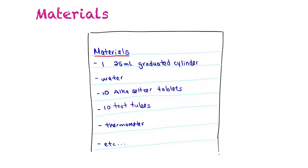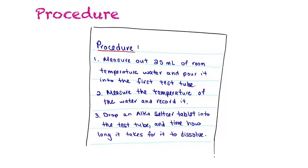In this experiment, I would list a 25 milliliter graduated cylinder, some water, 10 Alka-Seltzer tablets, 10 test tubes, a thermometer, and all the other materials needed. These would all be listed in my materials list.